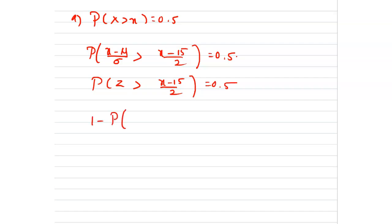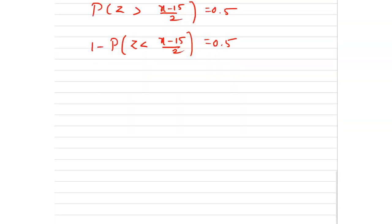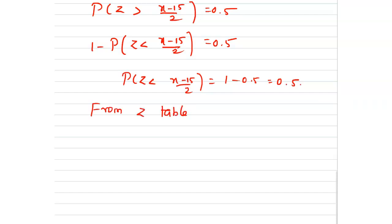So 1 minus p of z less than (x minus 15) divided by 2 equals 0.5. By simplifying, we get p of z less than (x minus 15) divided by 2 equals 1 minus 0.5, which is 0.5. From the z table, (x minus 15) divided by 2 equals 0 when z equals 0. By simplifying, we get x equal to 15. Hence the value of x is 15.